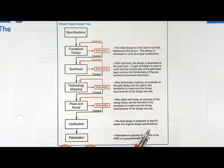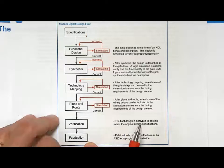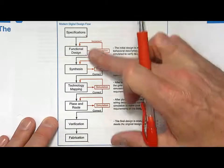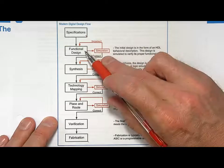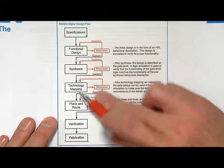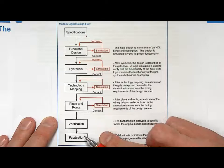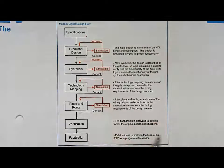The fabrication step is typically something where you create the files that would be used to fabricate an integrated circuit and that integrated circuit would pop out and that's your product. Or you could create the files that would be downloaded onto a programmable logic device and then that programmable logic device is the final product. This is the modern digital design flow that uses the CAD tools to allow you to do simulations at all these different levels of abstractions as you work down toward the final fabrication step.